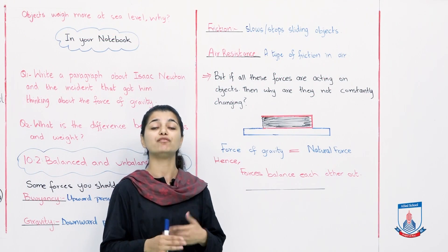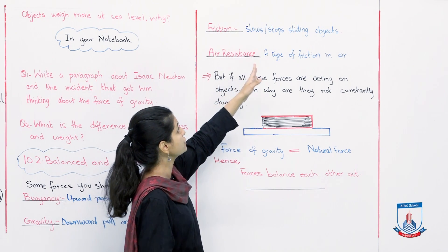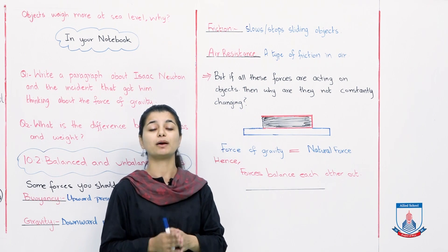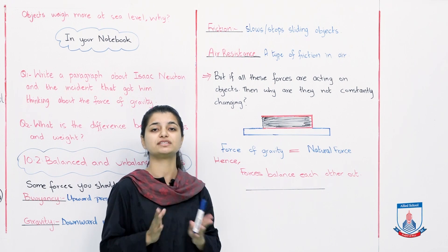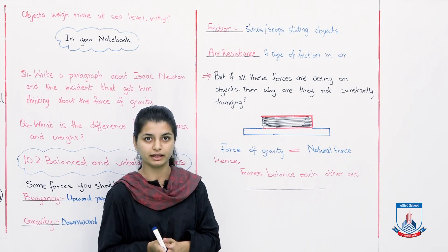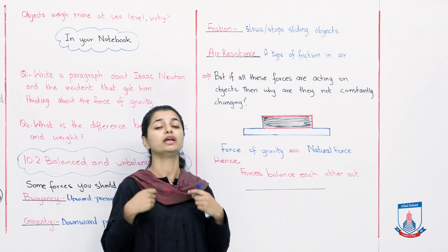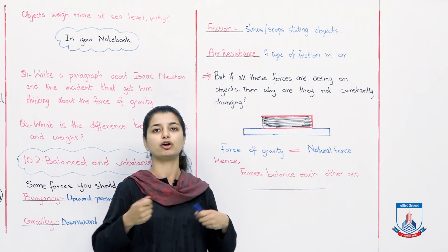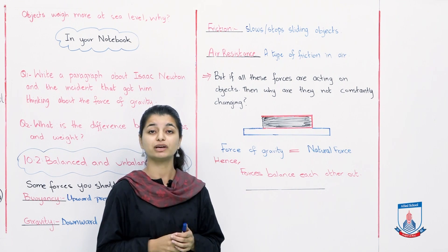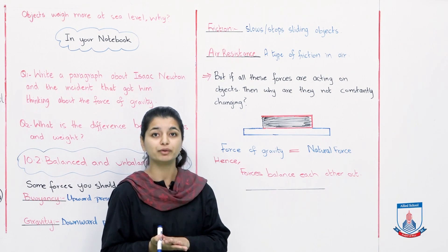Alright. So over here we have more types of forces. The first is friction. Slows or stops sliding objects. Friction is a very common force that you discuss. Basically, it acts when two things rub against each other. And because of that, their speed slows down, or they stop. So if you slide any trolley, okay, you have a trolley in your hand that you slide. After some point, it will stop. Why will it stop?